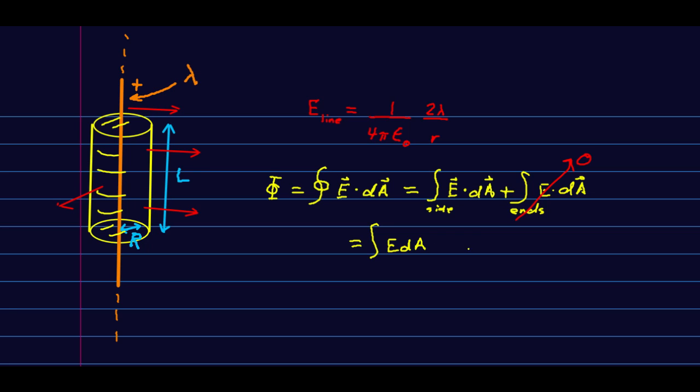And so it is just going to be the integral E dA. There would be a cosine theta, but it's gone. And so this is over the sides. But the other thing is, everywhere on this, we're the same distance from the line charge. And so the E field is a constant everywhere on the surface. And so I can just pull it out in front of the integral, the integral dA.